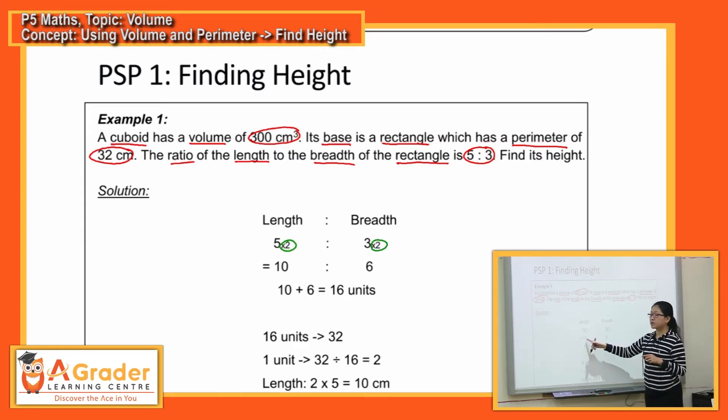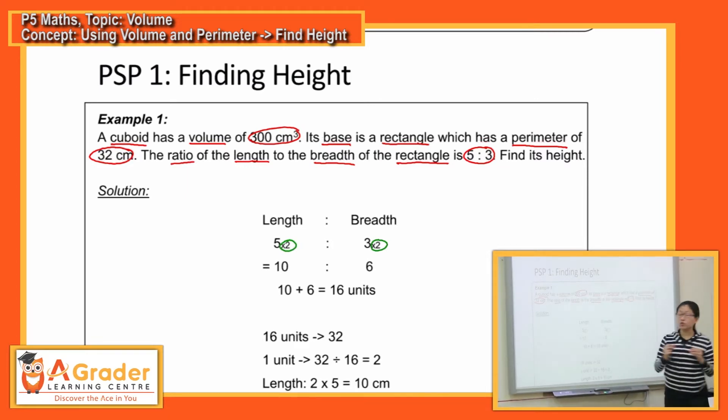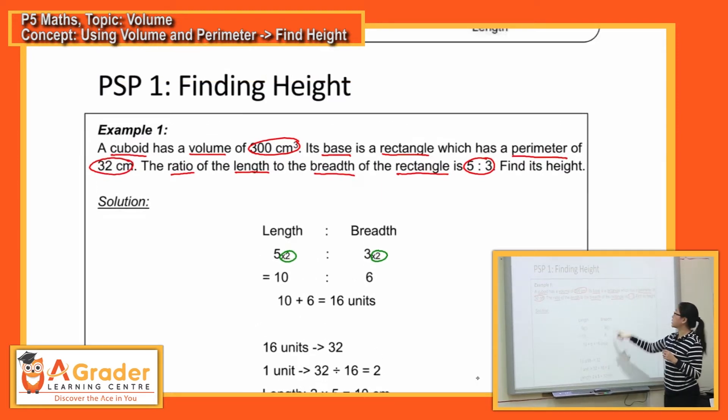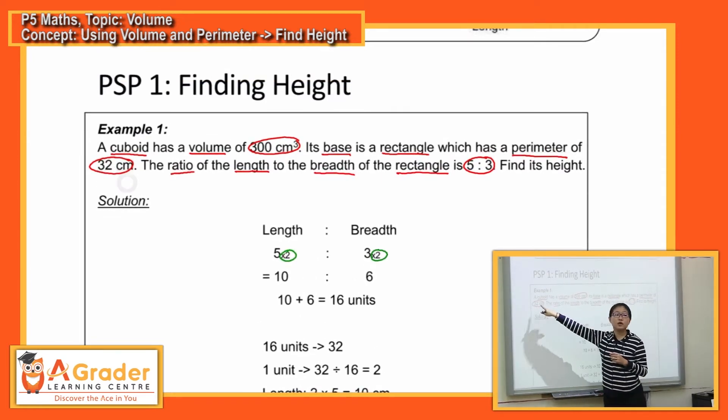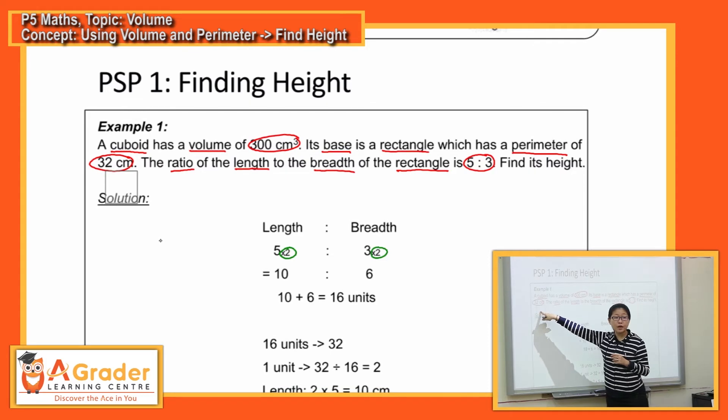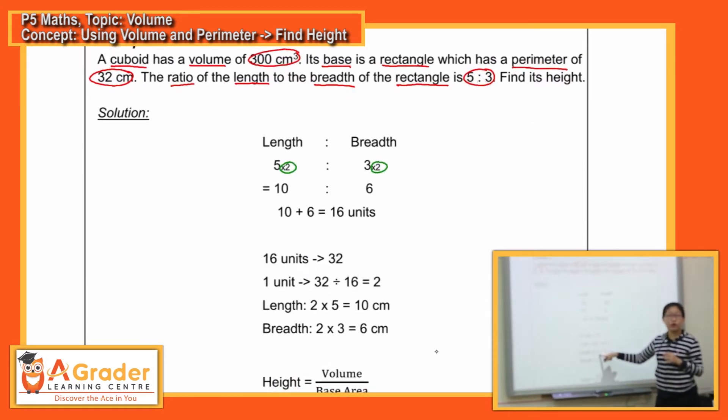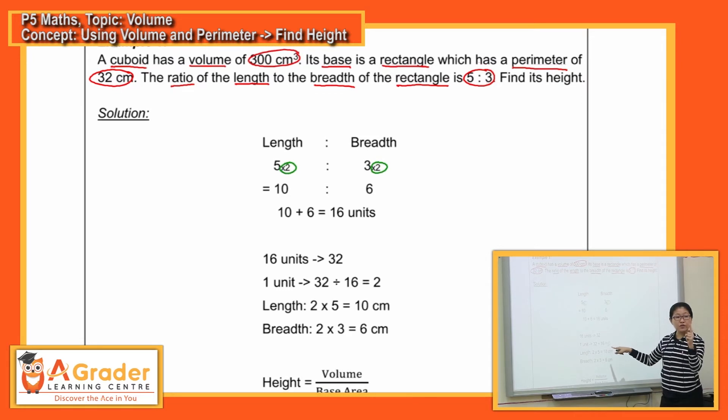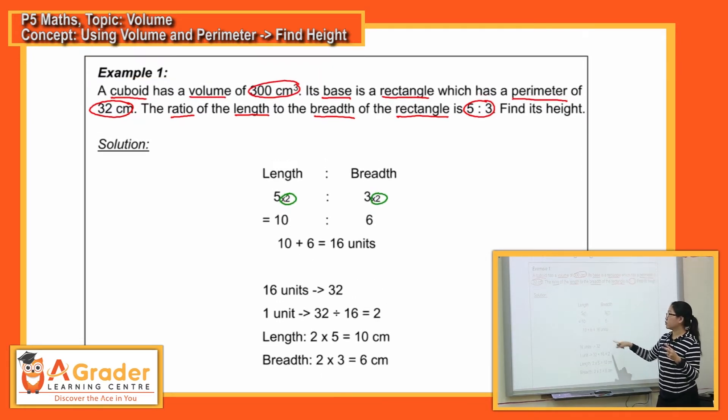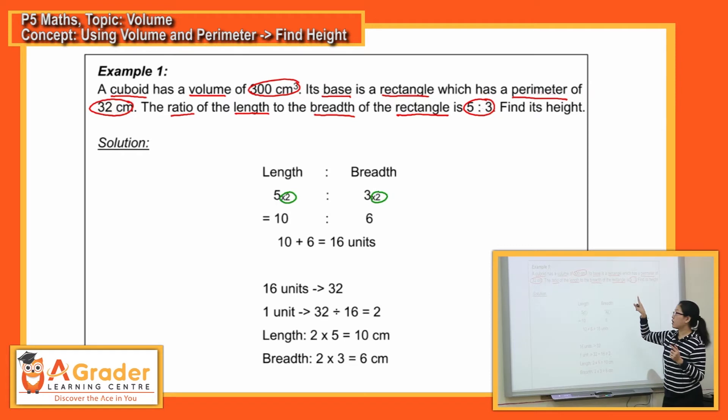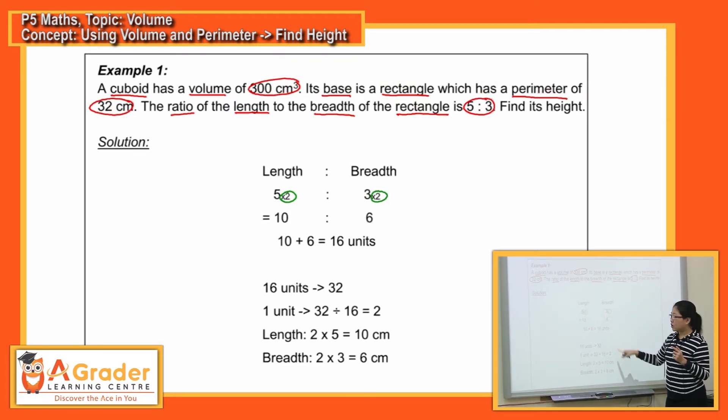So if you times 2 times 2, 10 units and 6 units will be actually the perimeter. So if we add it up, we get the 16, 16 will represent the perimeter of the 32 cm. So the moment you get 16 units is 32, you can always look for 1 unit. So 32 divided by 16 is 2. If 1 unit is 2, now you can find your length and the breadth.